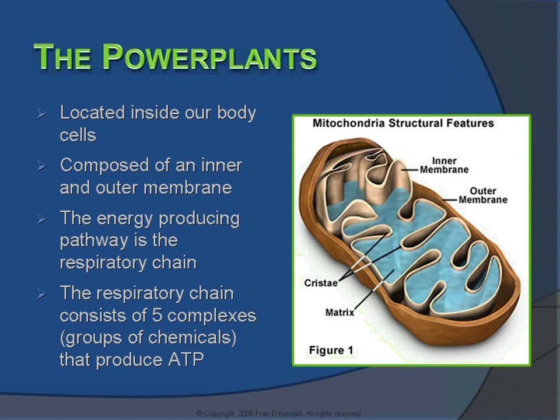Mitochondria are composed of an inner and outer membrane, and the energy-producing pathway is known as the respiratory chain, also known as the electron transport chain. The process whereby it produces energy is known as oxidative phosphorylation. You may see these terms used interchangeably. The respiratory chain consists of five complexes, or groups of chemicals, with the ultimate goal of producing energy, known as ATP.